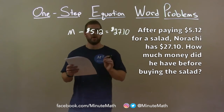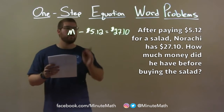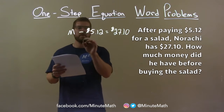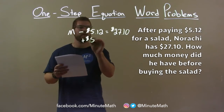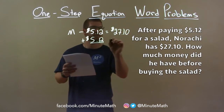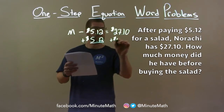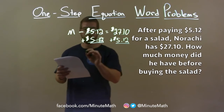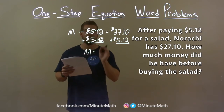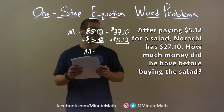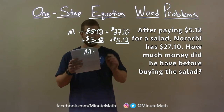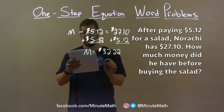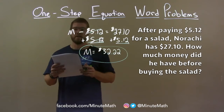Now we want to solve for M, his initial amount of money. We're subtracting $5.12, so the opposite of subtraction is addition. Add $5.12 to both sides — this eliminates $5.12 on the left, giving M. $27.10 plus $5.12 comes out to be $32.22. That's our final answer.